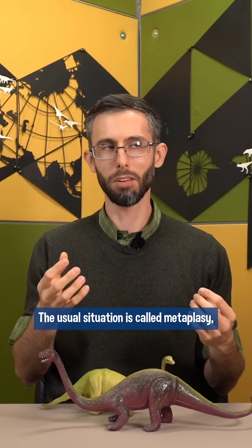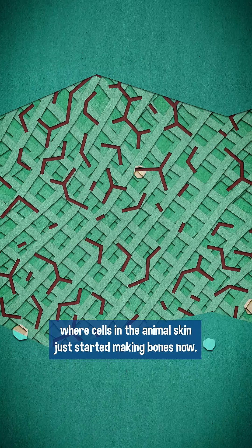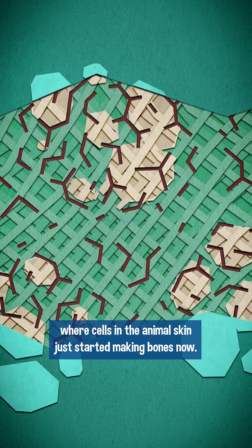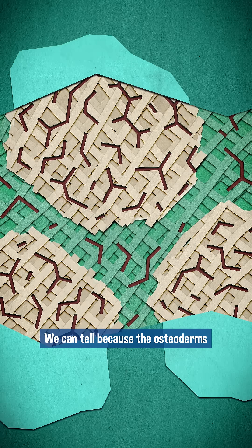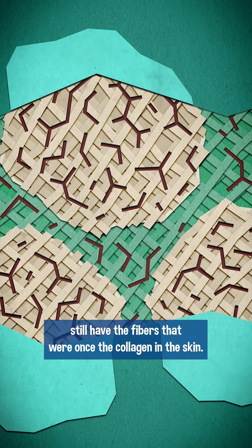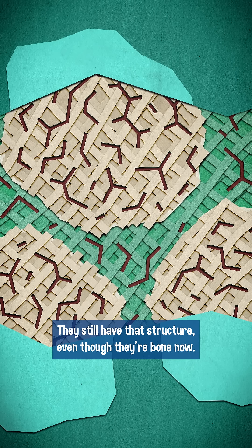The usual situation is called metaplasy, where cells in the animal's skin just started making bones. We can tell because the osteoderms still have the fibers that were once the collagen in the skin. They still have that structure even though they're bone now.